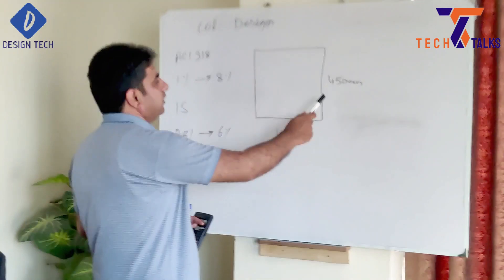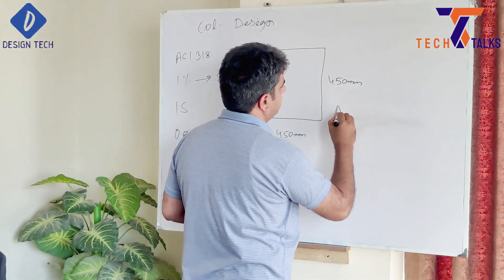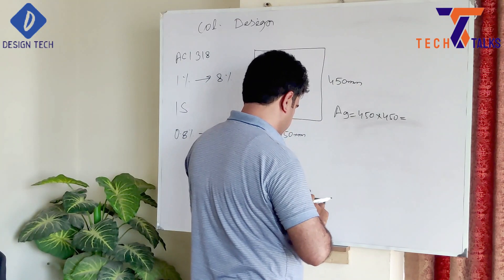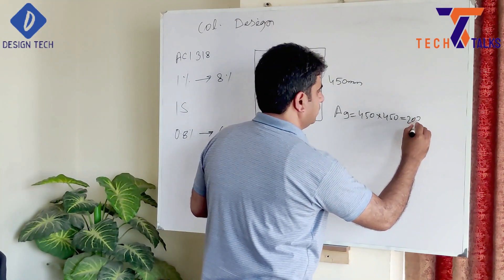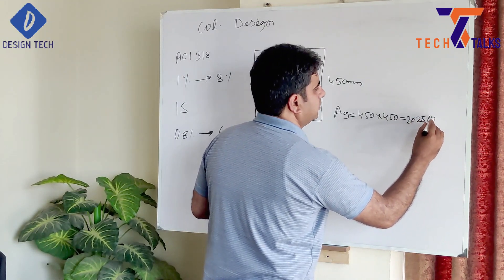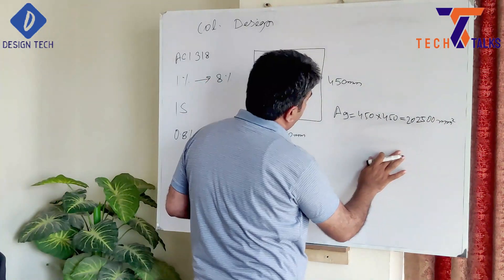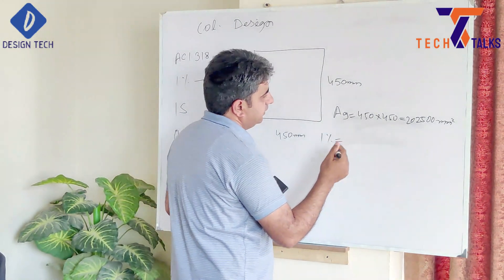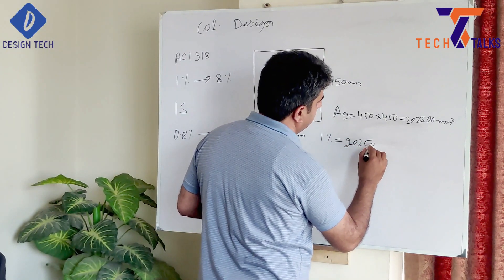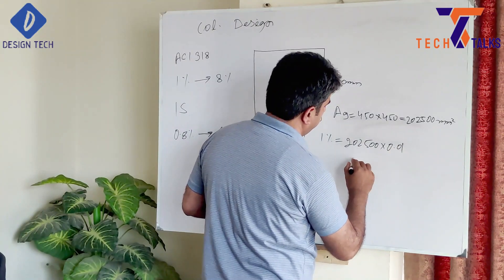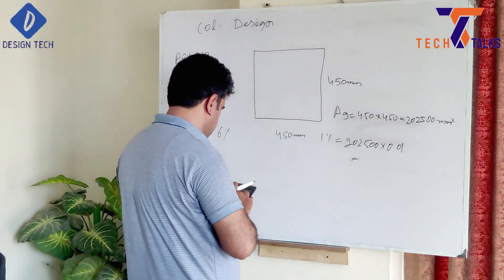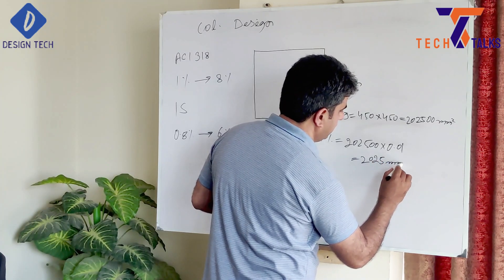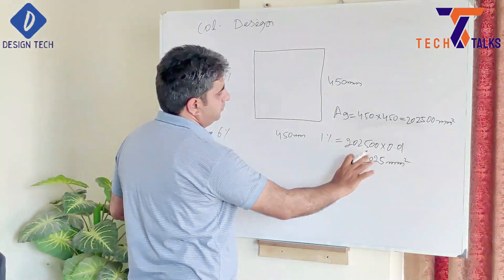For our column size of 450 by 450, the gross area is 450 × 450 = 202,500 mm². When we calculate minimum reinforcement at 1%, that is 202,500 × 0.01 = 2,025 mm². This is the minimum reinforcement area we must provide in this column when designing as per ACI code.